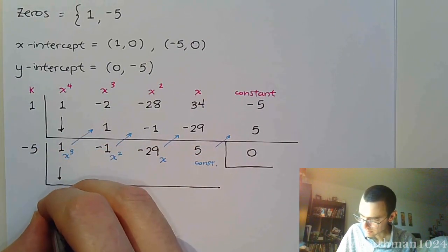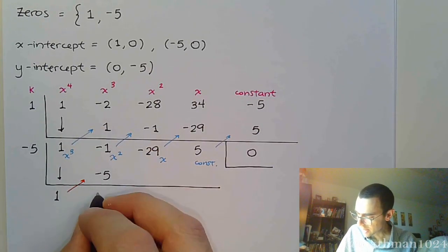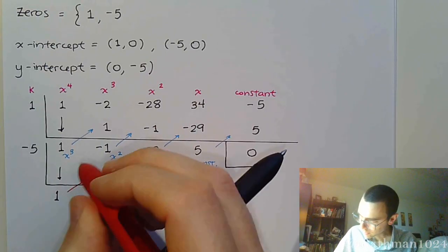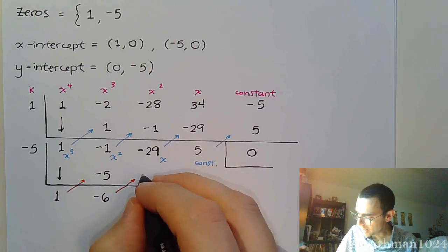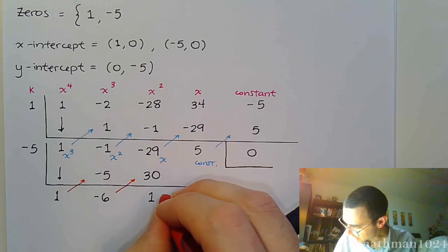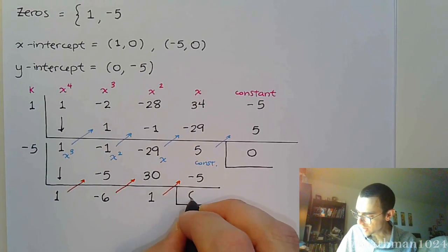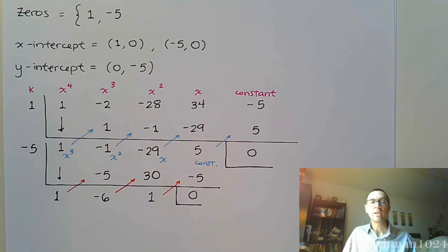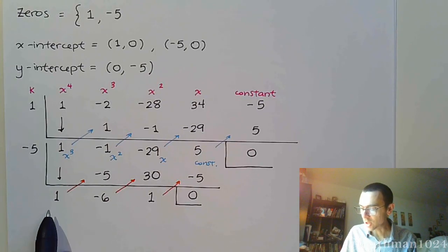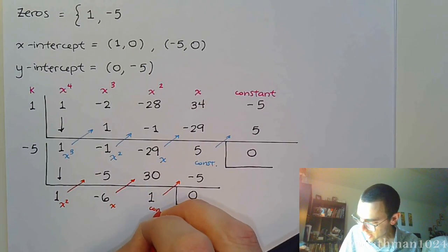So bring down the 1. Multiply times negative 5. We get negative 5. Add to get negative 6. Multiply to get positive 30. Add to get 1. Multiply times negative 5. We get negative 5. And again, we get a remainder of 0, which is what we're supposed to have. If you don't get a remainder of 0, that means you've messed up your sign somewhere or you didn't really understand what your 0 was. So now that we have this, and this is going to be our x squared, our x, and our constant term.